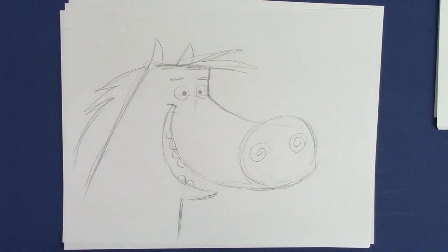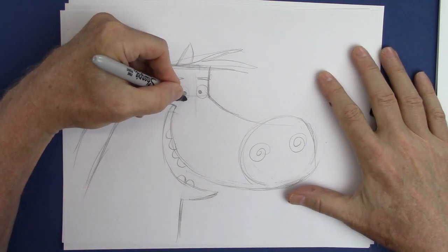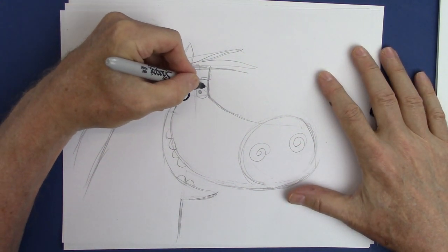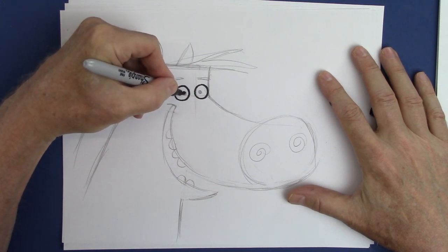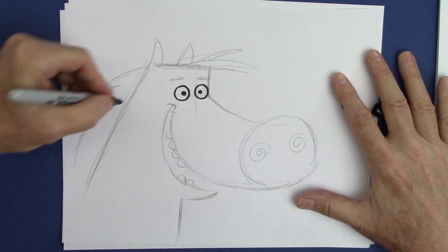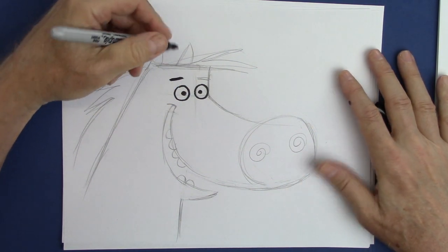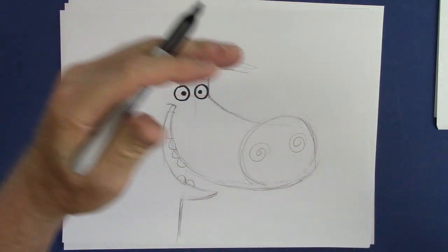This is some very simple line work. And now we will finish this up. Float the eyeballs in the middle of the eyes for a goofy look. You put them facing one way or the other is a little too much intention. A goofy character is kind of all over the place.